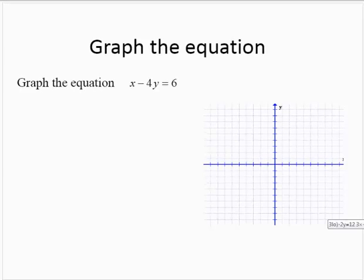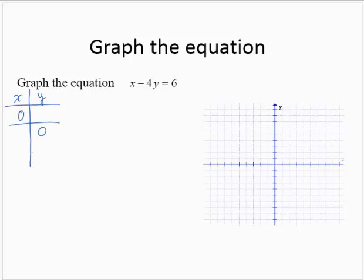Let's consider another example. x minus 4y equals 6. Again, I'll start by creating the table and making the substitutions for 0 for x and 0 for y. And then we'll figure out a third number later on.